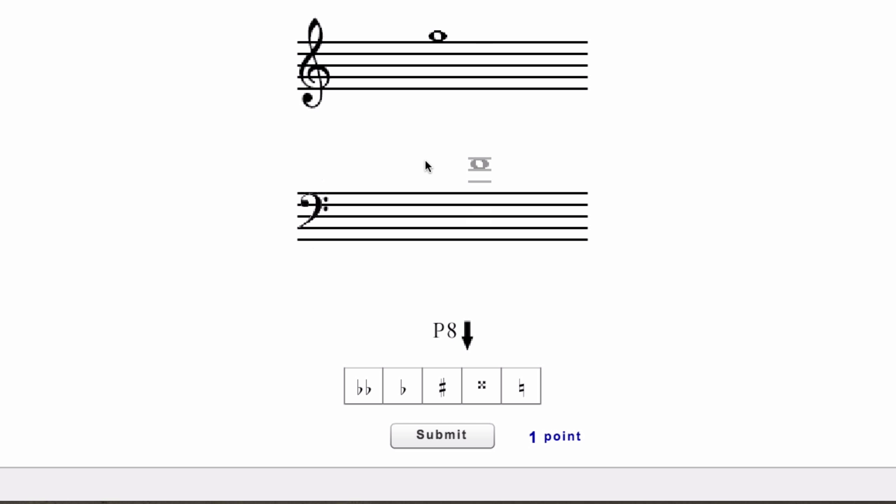Perfect octave below. Well, I know it's got to be, since it's an even interval, it means it's going to be on both lines and spaces, so I've got to go down here, and I go, here's 3, 5, 7, 8. Or if I can read the notes right, I can just go, here's a G, it's got to be the next G down. Submit.